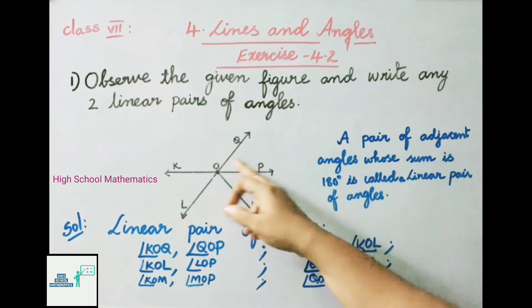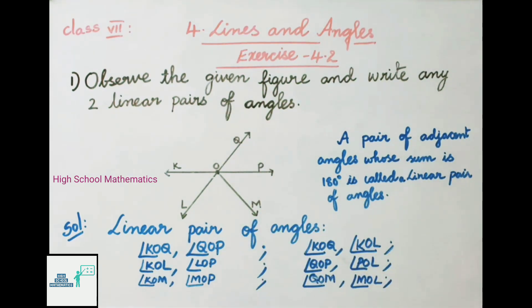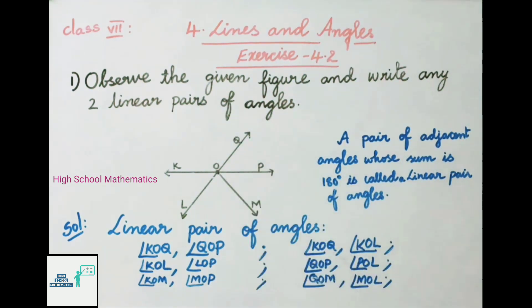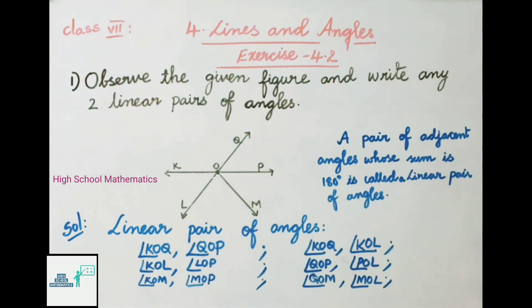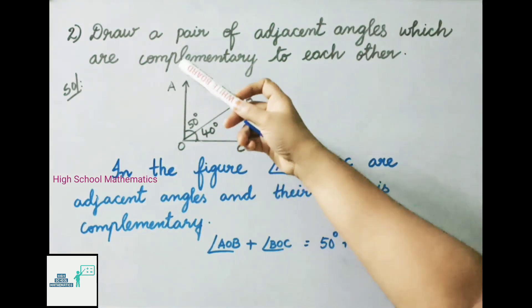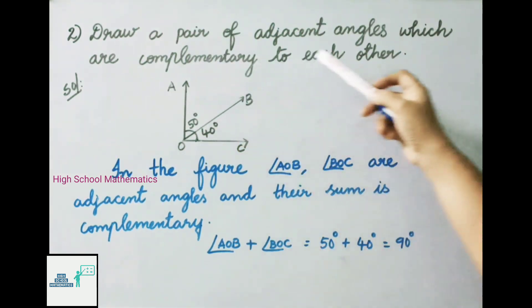Next: angle KOM and angle MOP. Last: angle QOM and angle MOL. So here we have written six linear pairs of angles. In our question they ask us to write any two linear pairs, so we can take any two linear pairs from these.